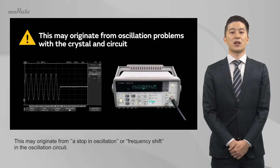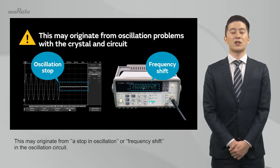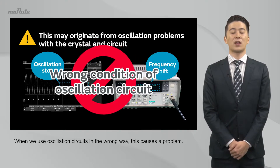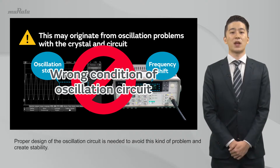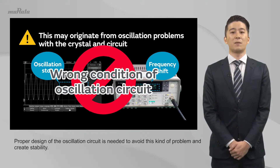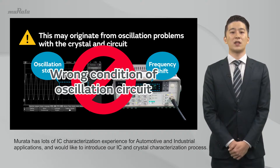or improperly operating? This may originate from a stop-in oscillation or frequency shift in the oscillation circuit. When we use oscillation circuits in the wrong way, this causes a problem. Proper design of the oscillation circuit is needed to avoid this kind of problem and create stability. Murata has lots of IC characterization experience for automotive and industrial applications and would like to introduce our IC and crystal characterization process.